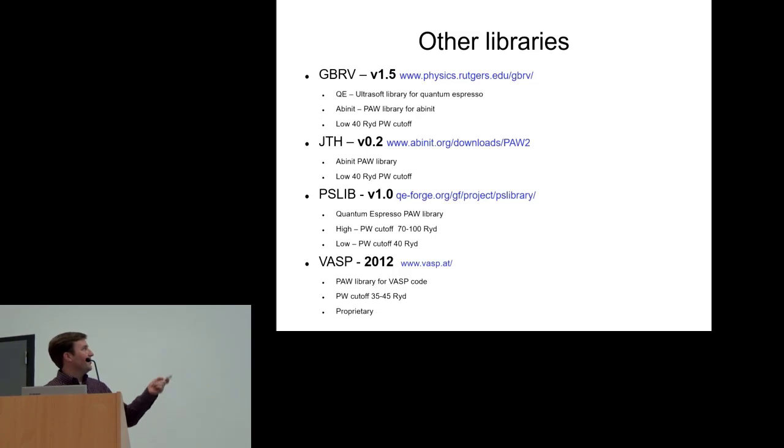I'm going to show some results for both my libraries with VASP and Quantum Espresso, and several other libraries. These are often older versions of the libraries which were available when I was doing the testing. You heard about the JTH set in the previous talk. There's also two versions of PSLib with a high cutoff and a low plane wave cutoff. The low plane wave cutoff is more comparable to my set, and then an older version of the VASP PAWs.